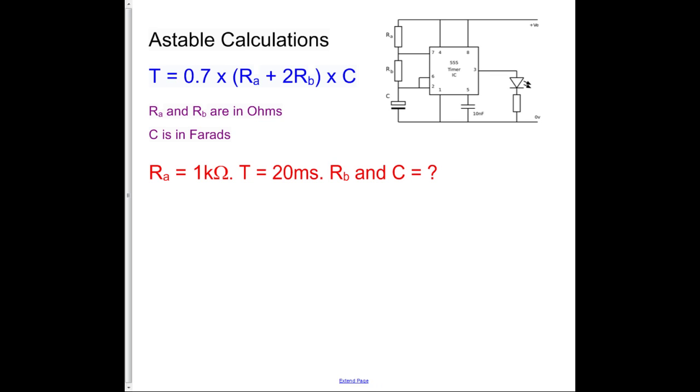So this is much worse, or better, depending on how much you like your maths. We've got RA as 1k, we want T as 20 milliseconds, that's what we're trying to achieve, and we haven't got RB or C, this is crazy.